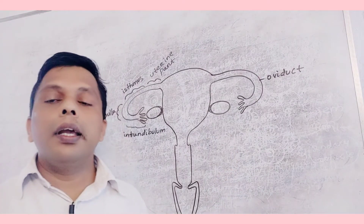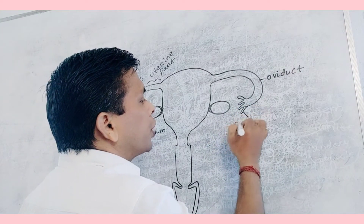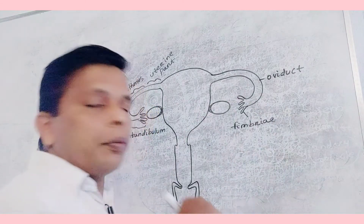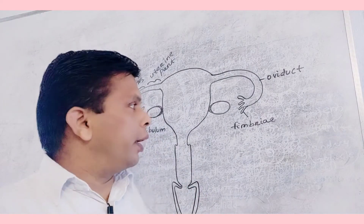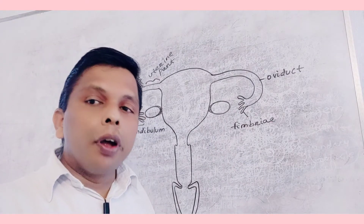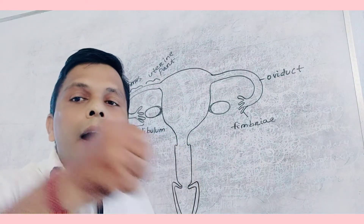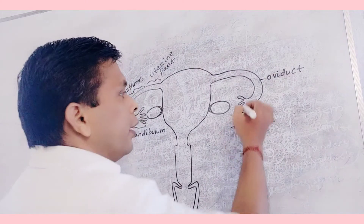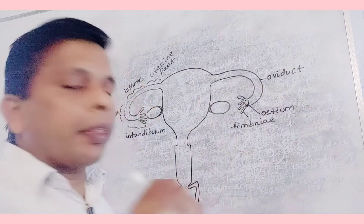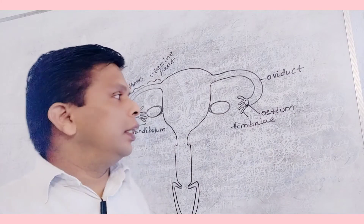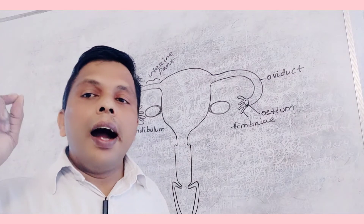The infundibulum is a funnel-like structure which consists of finger-like projections called as fimbriae — finger-like projections like the digits of our finger. For the function of fimbriae, after ovulation, the fimbriae hold the ovum and pull it into the oviduct. At the base of fimbriae, there is an opening called as ostium. Through this ostium, the ovum enters into the next region, the ampulla.